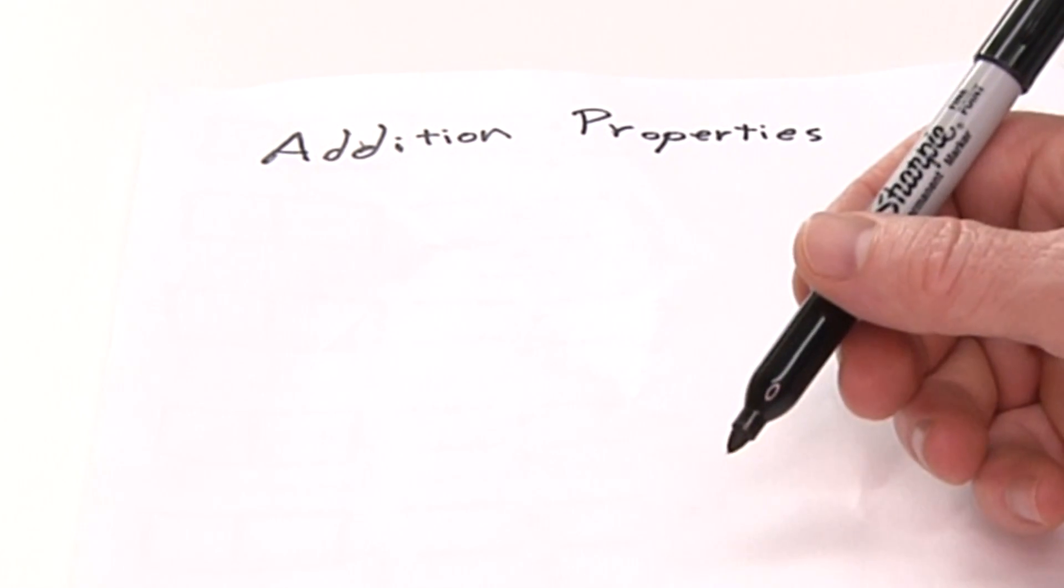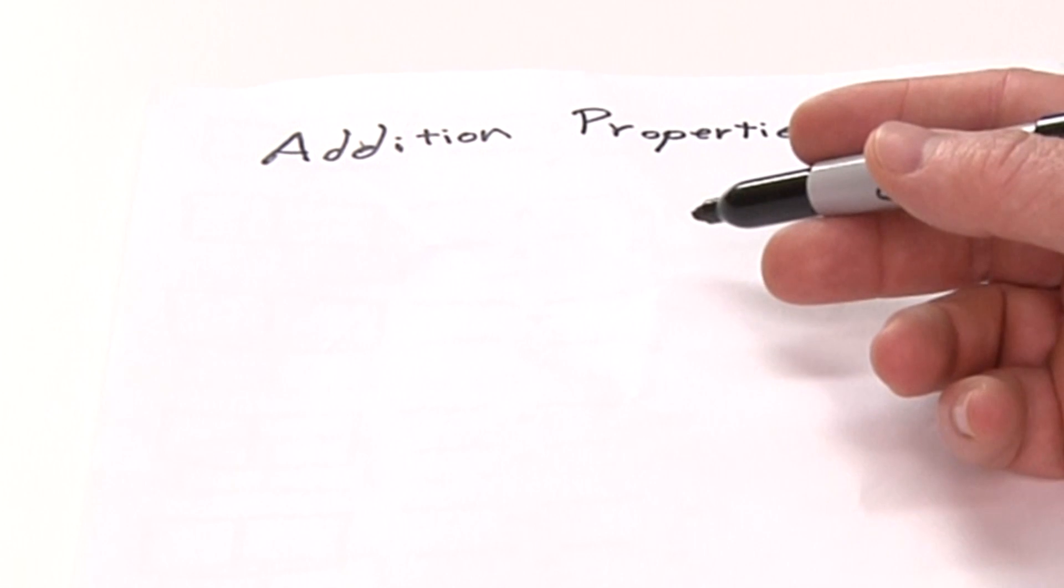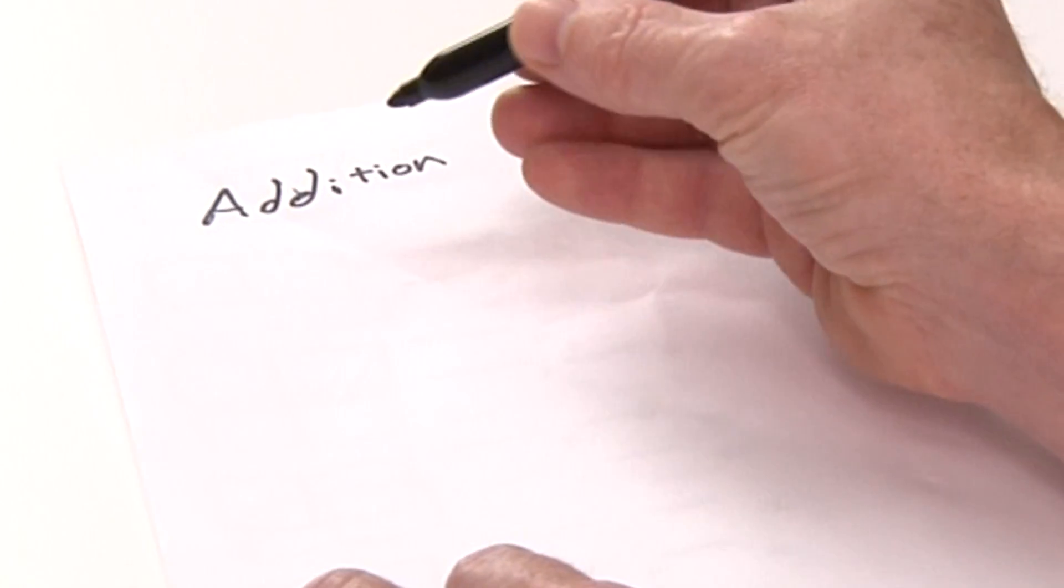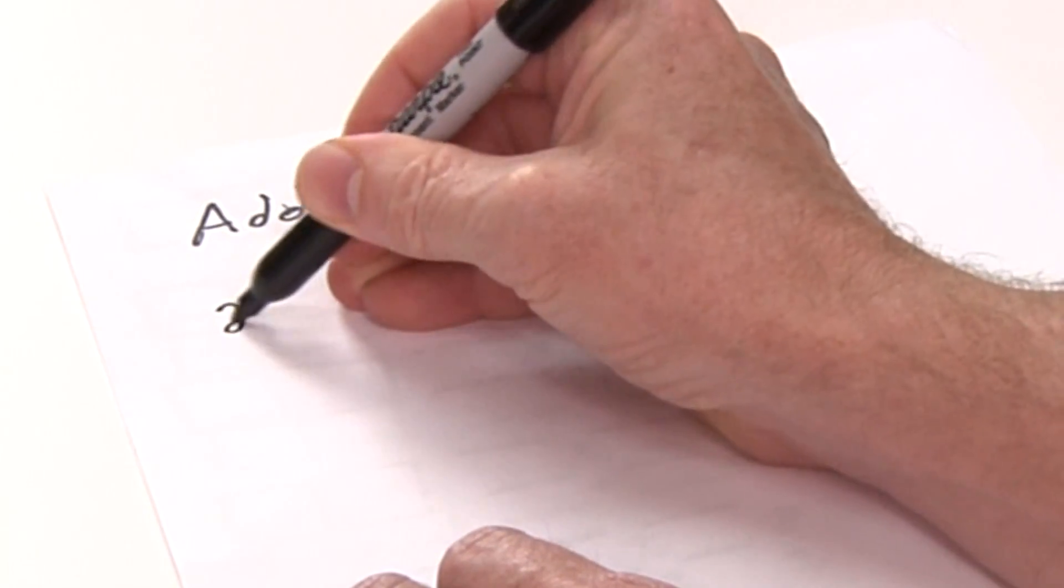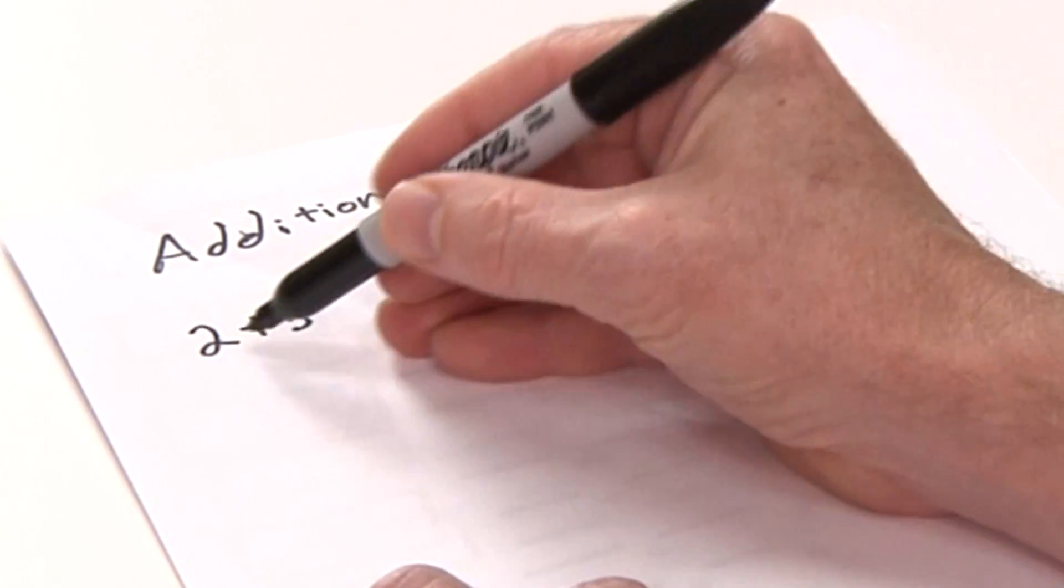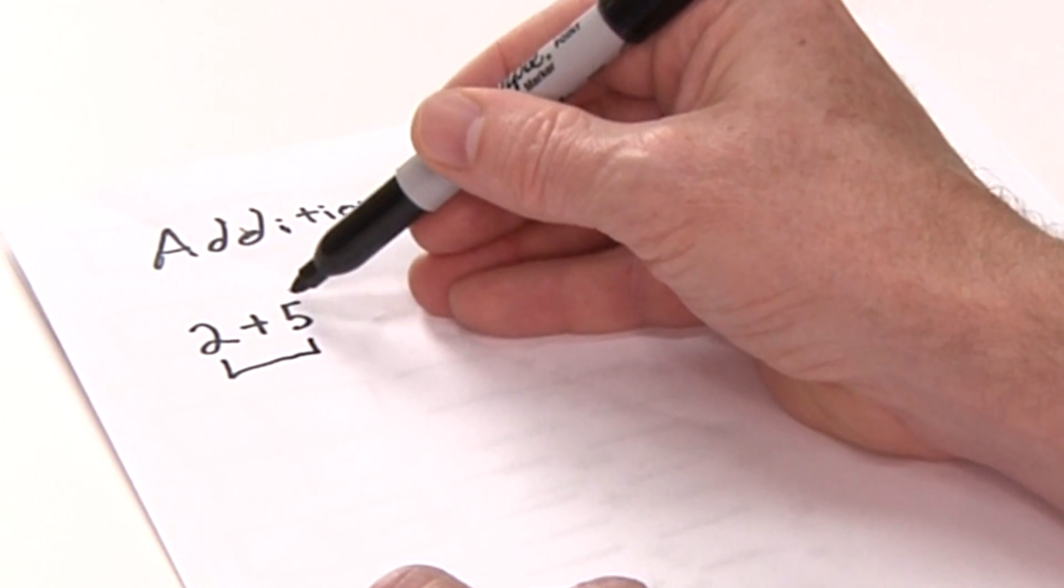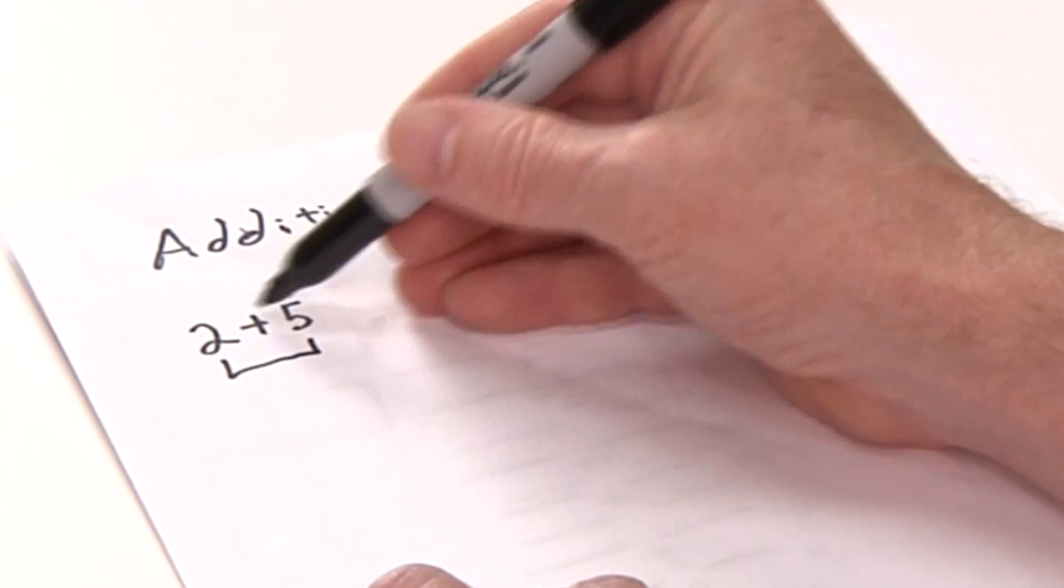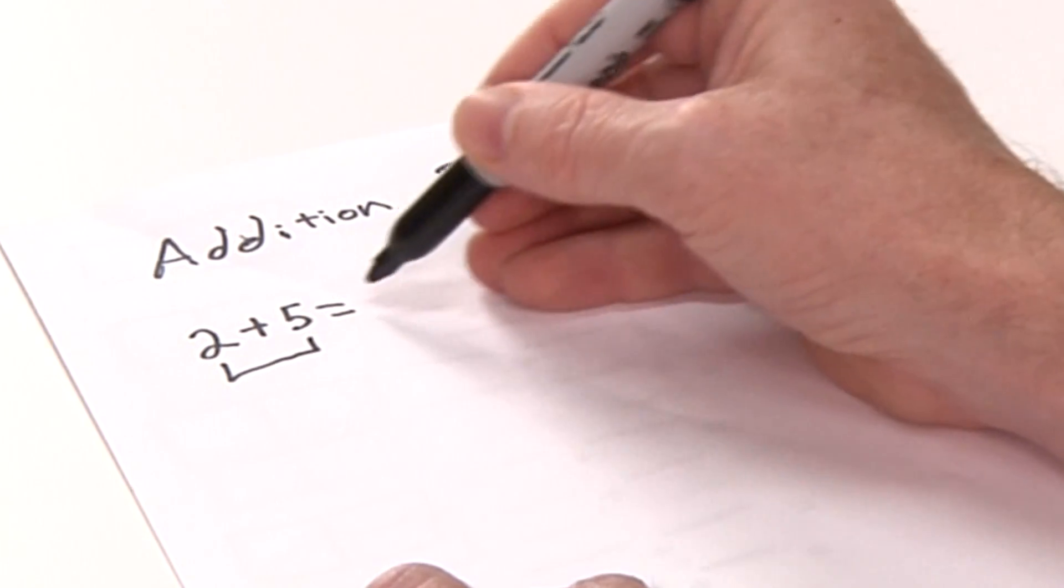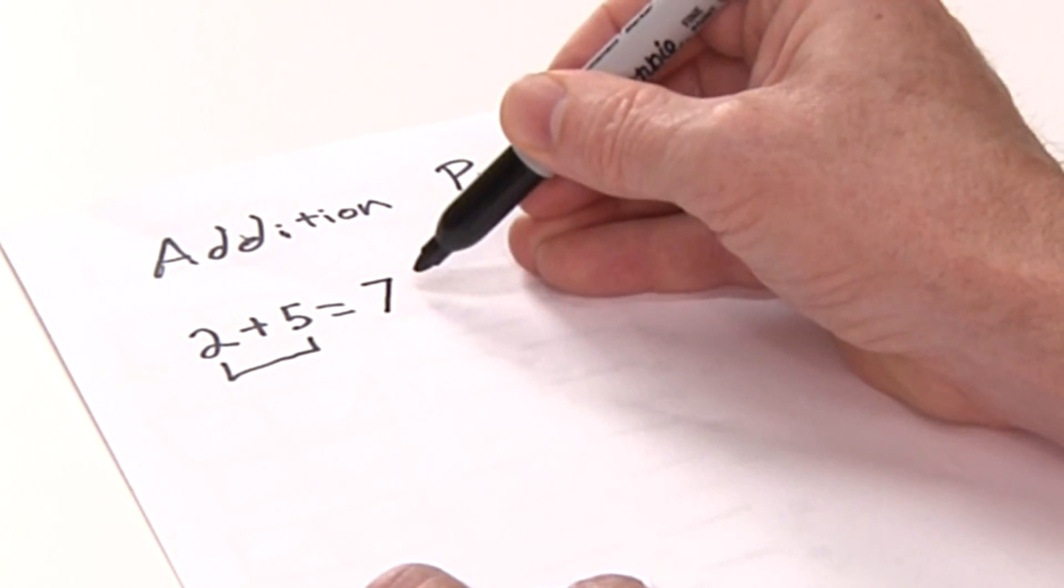Welcome to the show. Today we're talking about addition properties. When we add two numbers to find the sum, for example 2 plus 5, these numbers are called the addends. The sum is what these two addends equal, so 2 plus 5 equals 7. This is the sum and these are the addends.